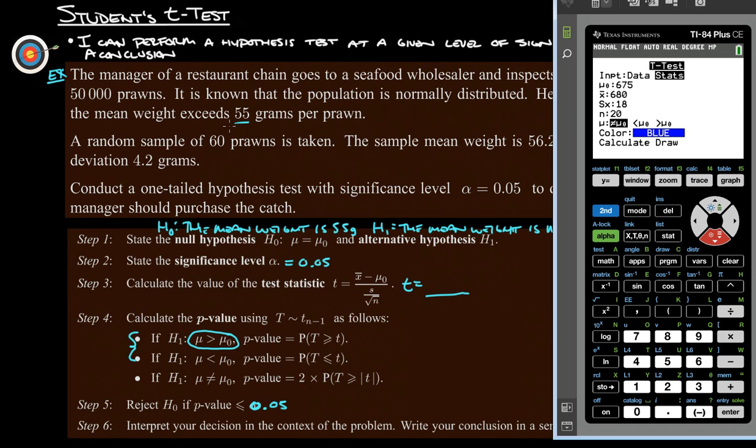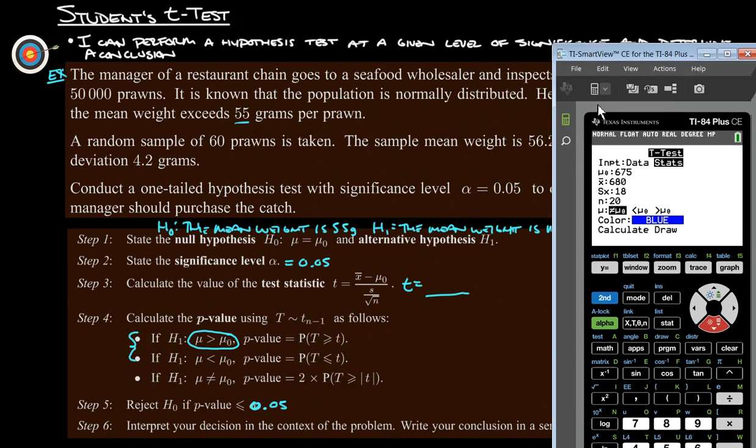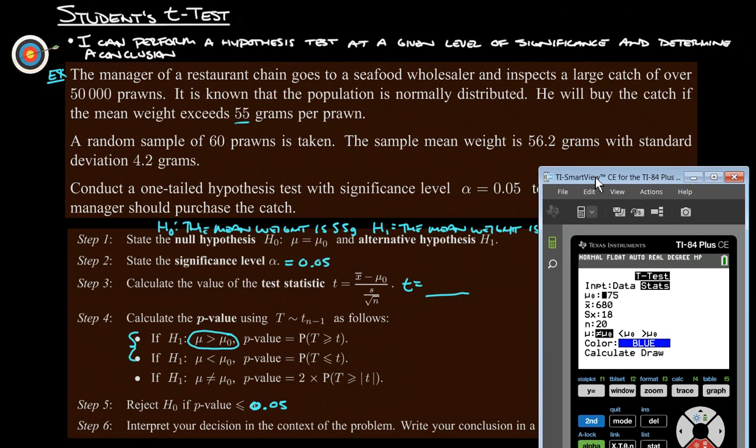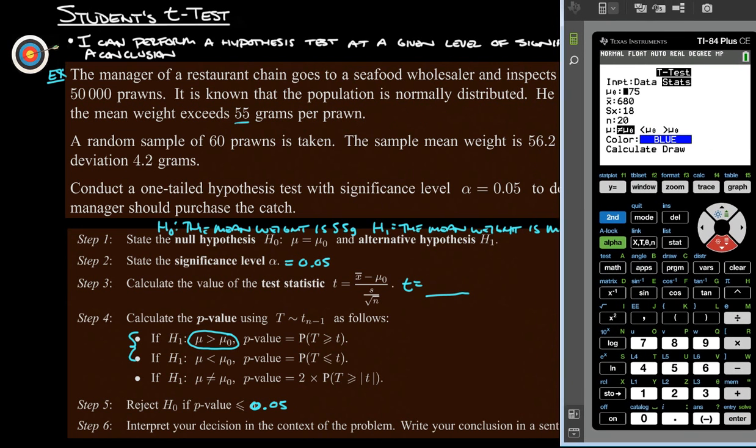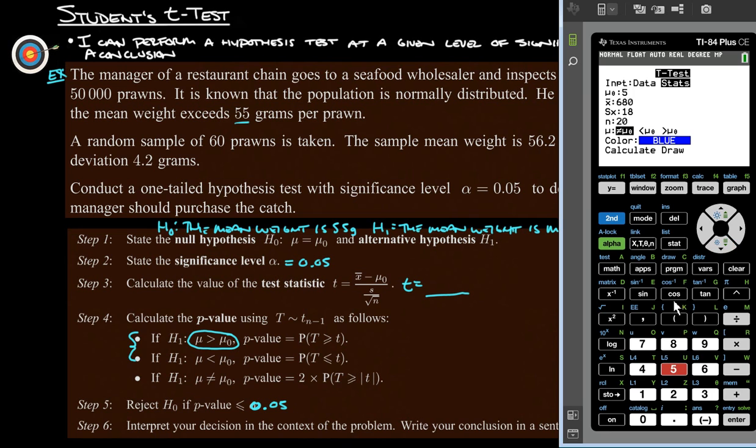This one's going to be the advertised one, so it says known that the population is normally distributed, and the mean weight - he will buy the catch if the mean weight exceeds 55 grams per prawn. So we're going to do 55 here. And then we found that in our sample the mean weight was 56.2, and our standard deviation was 4.2, and the number of trials was 60 trials because we had 60 different prawns that we measured.